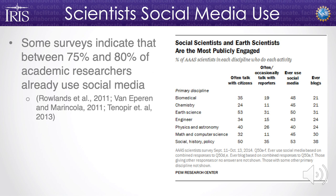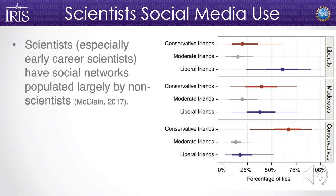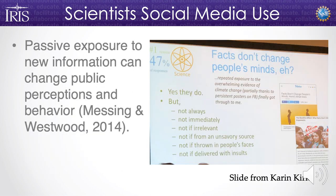Scientists — especially early career scientists — have social networks populated largely by non-scientists, and these networks are often ideologically and politically diverse. This is the part where everybody goes: 'I don't want to argue with people on the internet.' But we must, because passive exposure to new information can actually change public perceptions and behaviors. Researcher Karen Kirk is going into the dark corners of Reddit to understand why people change their minds about scientific consensus. She looked at a thread about people who used to think climate change wasn't real and now have changed their mind.